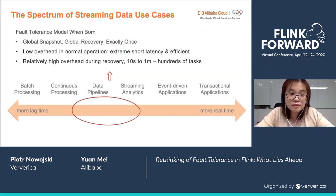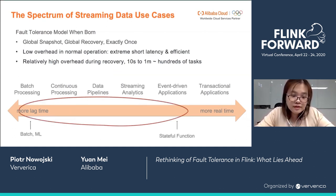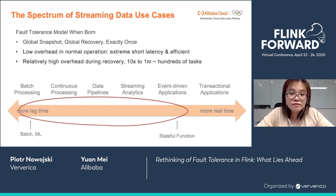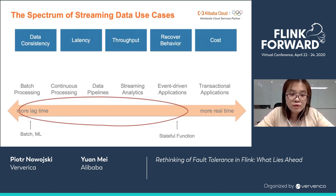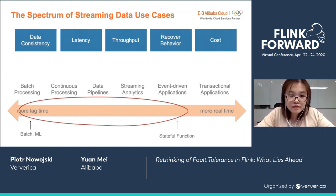But if you look at the spectrum today, Flink is no longer only where we were born. We have diverse use cases covering a broad range — from batch processing, which allows hours to days of delay, to event-driven applications like stateful functions that require within-millisecond delay. Our fault tolerance model hasn't changed that much, so the question is: does the exactly-once global recovery fault tolerance model still satisfy these new needs? The answer is no. Different use cases have different requirements for data consistency, latency, throughput, cost, and recovery behavior.